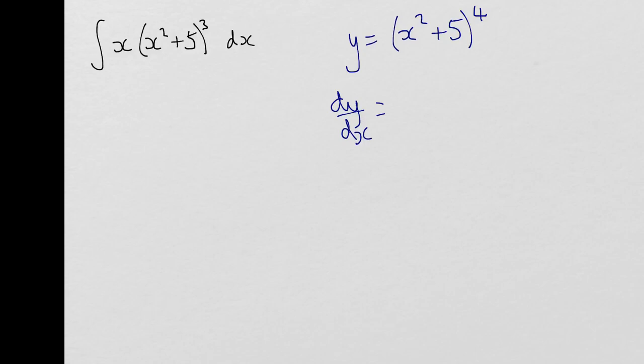So dy/dx of this function. Chain rule, because I've got a function in a function. The x² when I differentiate this expression inside gives 2x. Then when I differentiate it as a whole, I'd have brought that 4 down. The x² + 5 would remain the same, and I'd reduce the power by 1. So all in all, 8x(x² + 5)³.